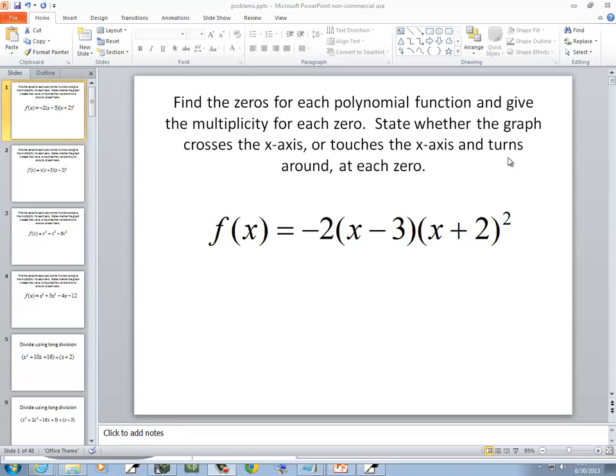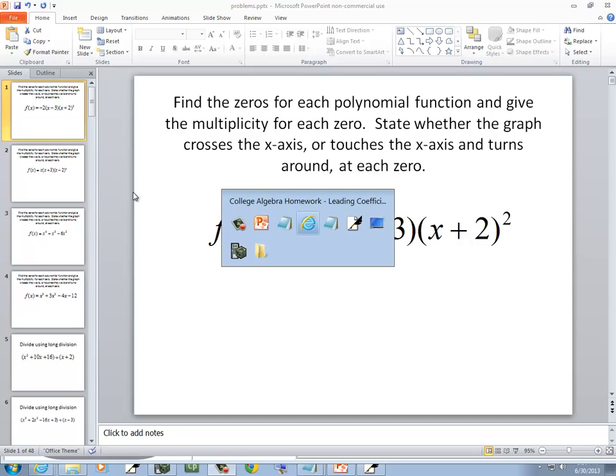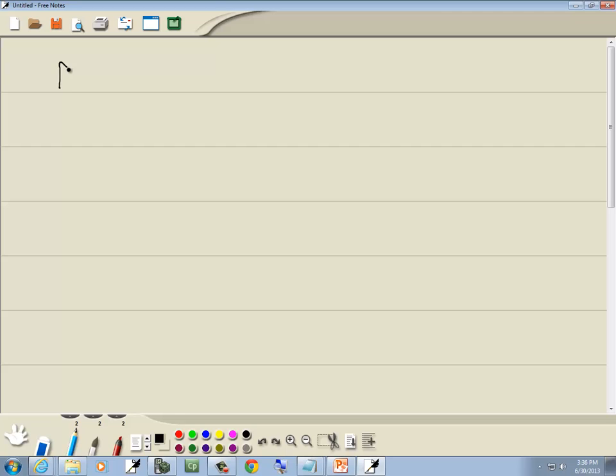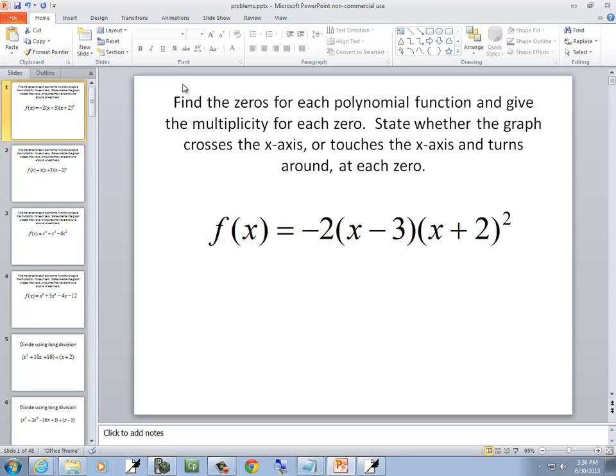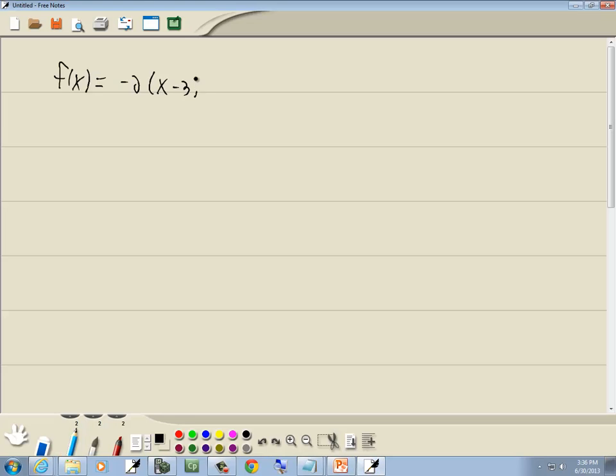In this problem we want to find the zeros for each polynomial function and give the multiplicity for each zero. So let's start there. We got f(x) is equal to negative 2 times x minus 3 and x plus 2 squared.